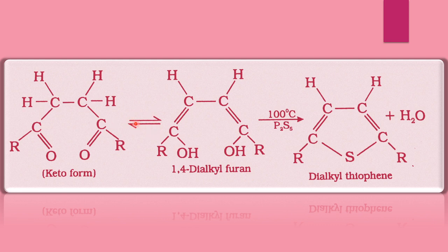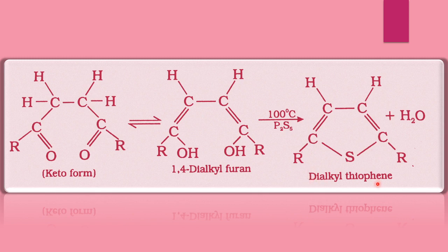This is the resonance form or equilibrium form. The H group is removed and formation of carbon-oxygen double bond occurs — it is a keto form. This structure, written in keto form, then reacts with phosphorus pentasulfide to form dialkyl thiophene. The R group is attached to carbon positions on both sides. It is a dialkyl thiophene, and this reaction name is also called Paal-Knorr synthesis.